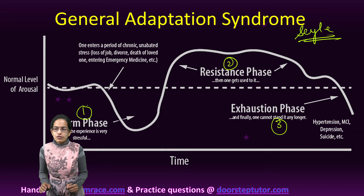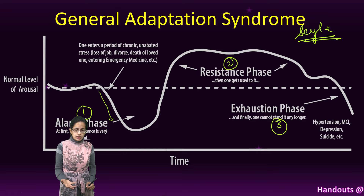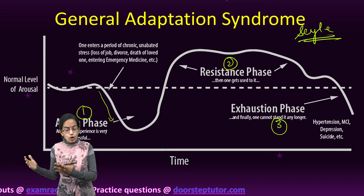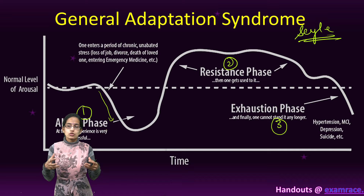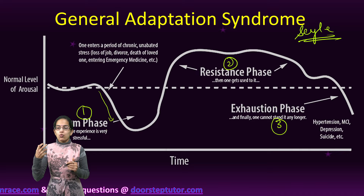The alarm phase is when one enters into stress, and the level of arousal immediately starts to decline. This could be any stressor — physical, environmental, psychological, or social. There could be loss in the family, loss of job, inability to attain higher education, or an internal conflict between a job or education. Those are all phases where one enters into a stress situation.